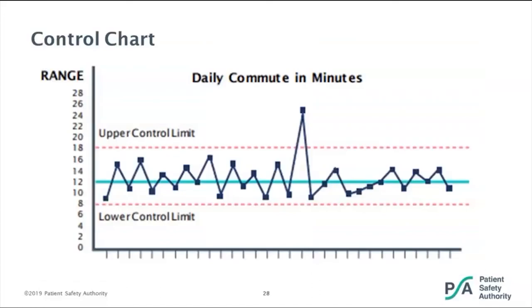Control charts — this is a great example from our annual report using daily commute times, which we can all relate to. On a control chart we have our median, our mean, and then our upper and lower control limits. The upper and lower control limits are set three standard deviations away from your mean. That means almost 100% — 99.7% — of your data points should fall between those control limits. When you have points outside of your control limits, you know there's special cause variation — something happened outside the normal that caused it. For commute times, this could be a traffic accident, inclement weather, or a blizzard.